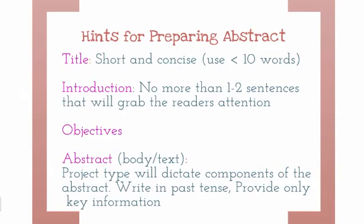Start with the title. Make it short and concise, usually less than 10 words. Some organizations even have a specific character limit that you shouldn't exceed. It should describe briefly what your project is about, yet be catchy enough to grab the reader's attention. The next section is often a short introduction, usually no more than one to two sentences. The introduction describes your project in a little bit more detail than what you can include in the title and also should grab the reader's attention.